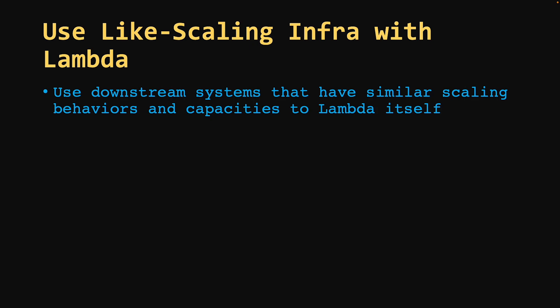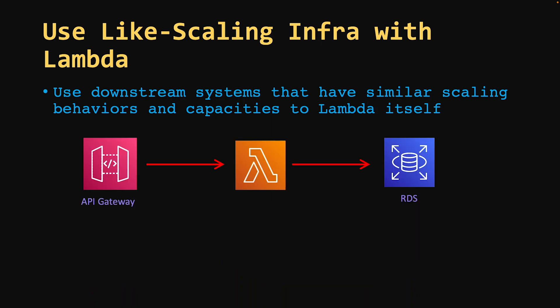Next, use like-scaling infrastructure with Lambdas. You should always use downstream systems that have similar scaling behaviors and capacities as Lambda. For example, in a simple architecture with API Gateway sending requests to Lambda which stores results in RDS — if your API Gateway receives 500 requests per second, there would be 500 Lambdas invoked. All 500 Lambdas would try to create a connection with RDS. With relational databases, you cannot open that many connections at the same time.